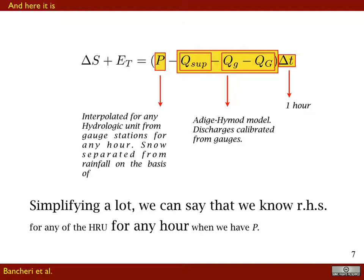What is interesting in the budget is what we know and what we don't know. In our case, precipitation is interpolated from 12 gauge measurement stations for any hour, and rainfall is separated from snowfall through a method using satellite data from MODIS. Discharges are estimated through a lumped model, the Adige high-mode model, which separates the HRUs.